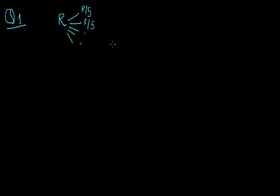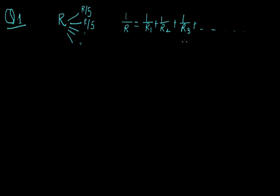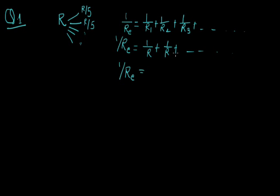Now these parts are connected in parallel. In parallel combination, the equivalent resistance is found by the relation: 1/R = 1/R1 + 1/R2 + 1/R3 and so on up to N. If all resistances are equal and connected in parallel, then their equivalent can be found by 1/R + 1/R + ... giving N/R. So R equivalent = R/N.